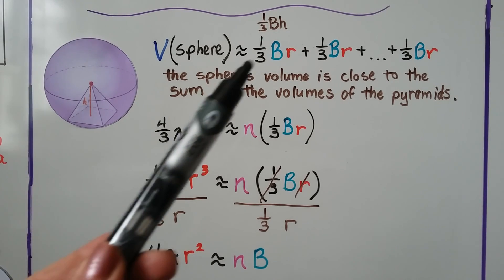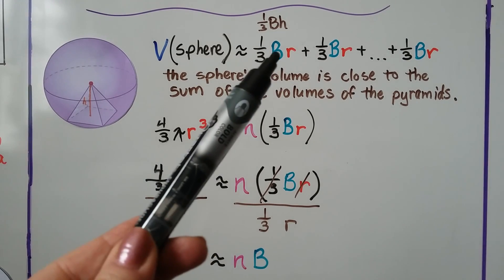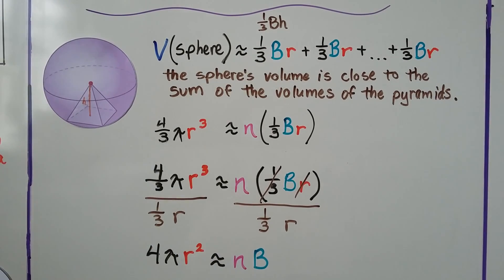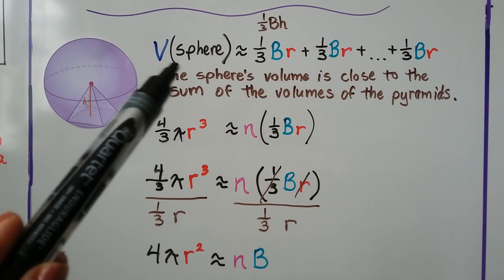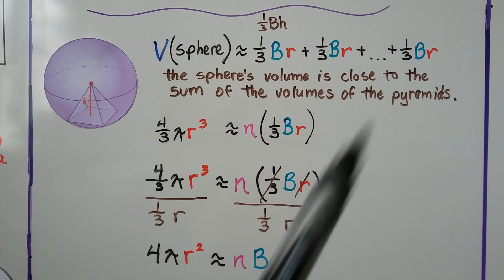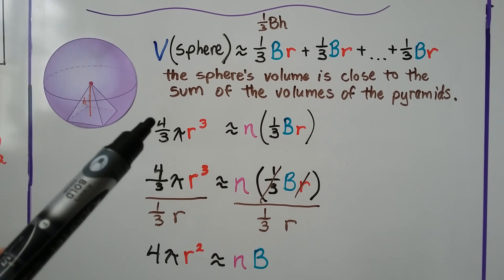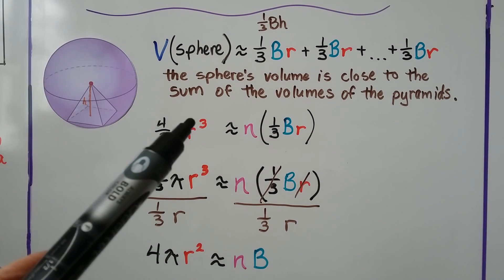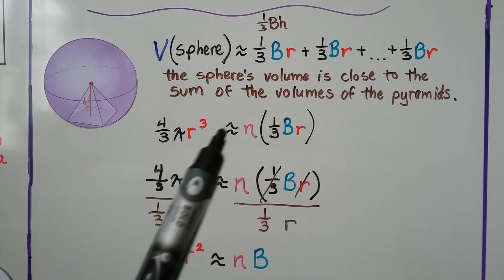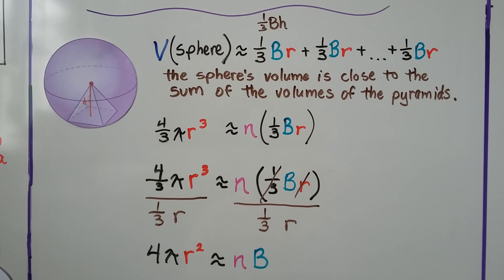The formula for the volume of a pyramid is 1 third times base times height. Because we're using the radius for the height, we have 1 third times base times radius. The volume of a sphere is approximately the sum of the volumes of these pyramids. So the formula 4 thirds times pi times radius cubed is approximately the number of pyramids times 1 third times the base times the radius.